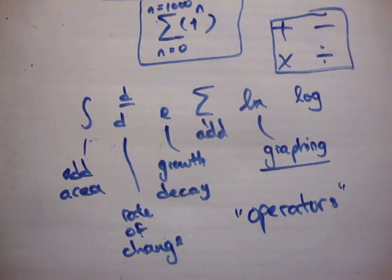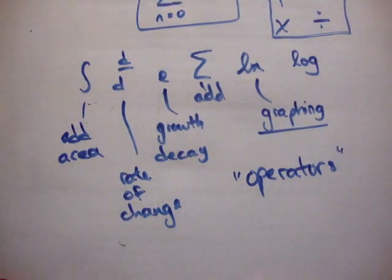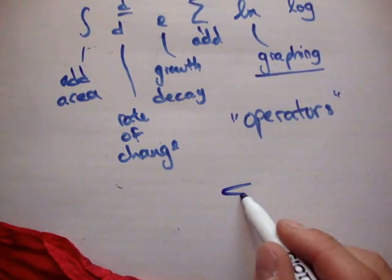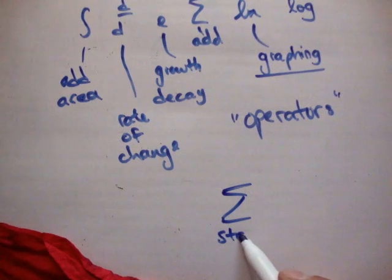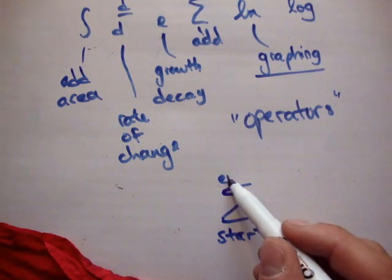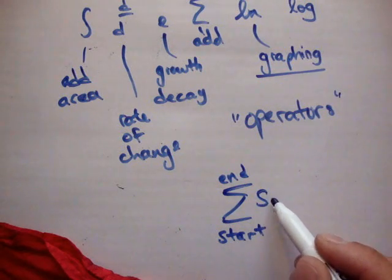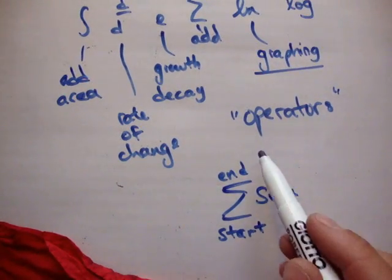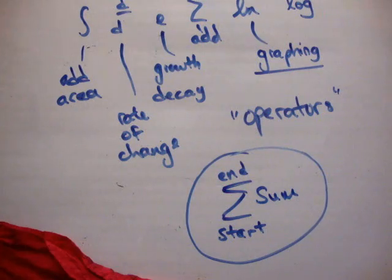Capital sigma is a way of writing long sums in a very short way — no need to be scared of it. You have your symbol, your start point, your end point, and then your sum. That's pretty straightforward.